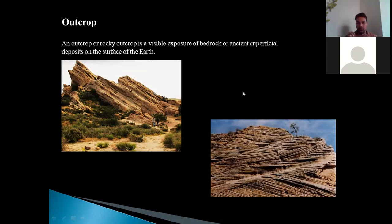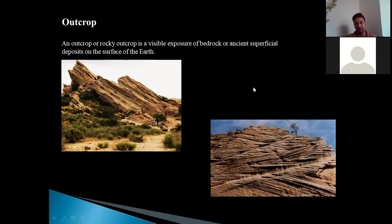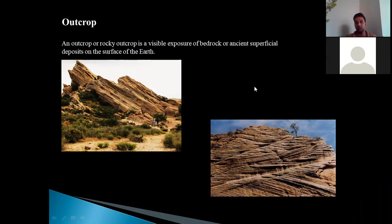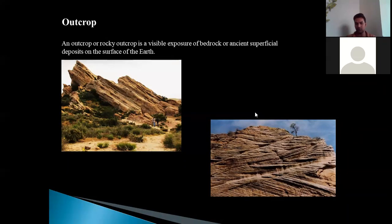Sometimes the rock beneath the earth's surface is exposed at some locations, maybe because of weathering and erosion or the removal of overburden. Or sometimes when a deposit has been made on the earth's surface itself, that exposure can also be called an outcrop. An outcrop is the manifestation of the rock strata beneath the earth's surface, on the basis of which you can study and measure the different structural features of the earth's crust.